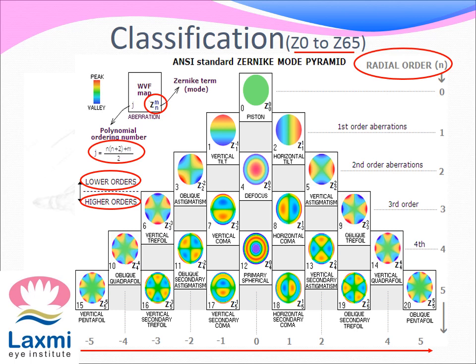Warm colors denote peak and cool colors denote valley. First and second orders are the lower order aberrations, which are the refractive errors. While third order and above are higher order aberrations — that is, spherical aberration, coma, trefoil, tetrafoil, pentafoil and so forth.